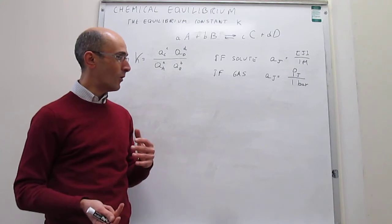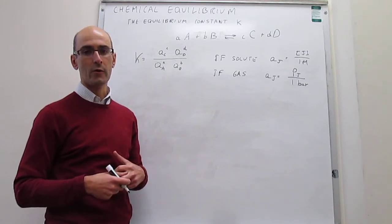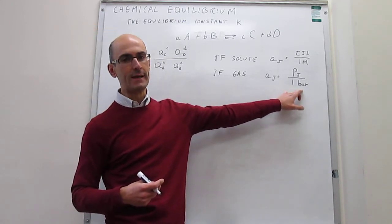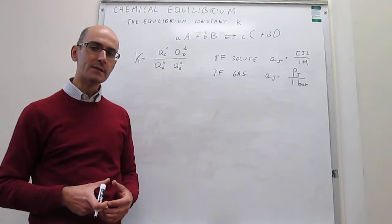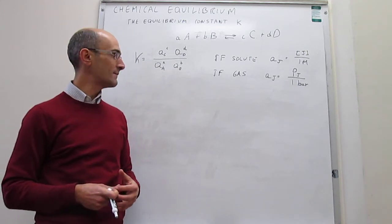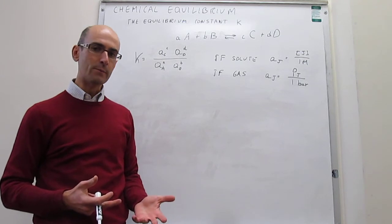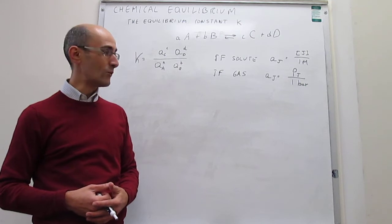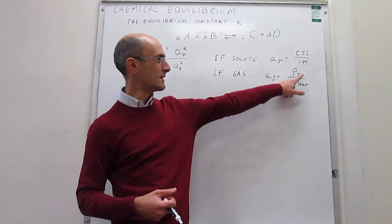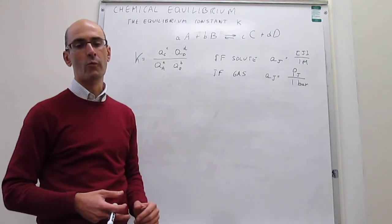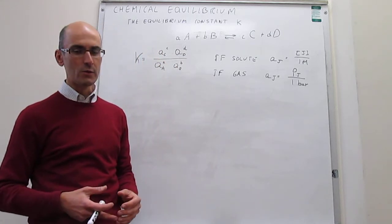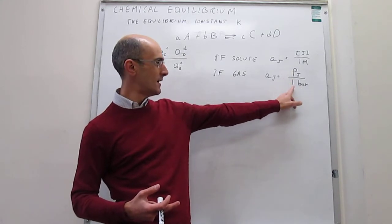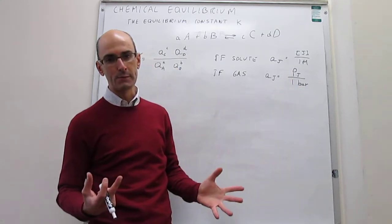For all intents and purposes in our work, we are not going to be using bar — we will be using atmosphere instead. That is an approximation, but it is a sensible one because the difference between atmosphere and bar is only about 1%. We are more used to working in atmospheres, even though in reality those activities have to have units of bar divided by one bar. In problems, we will simply plug in partial pressures in atmospheres, and the reference pressure will be one atmosphere.